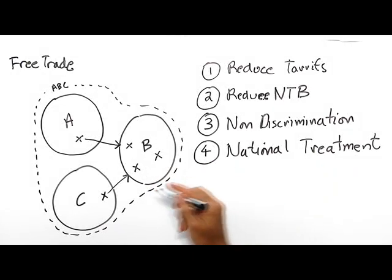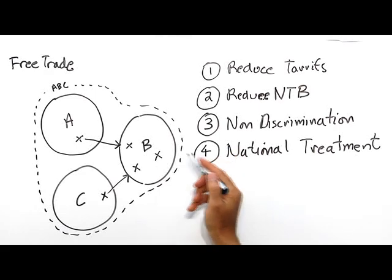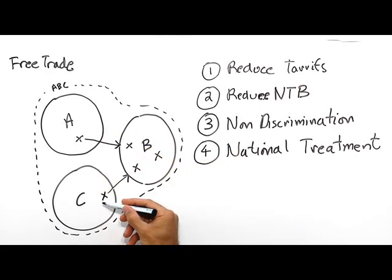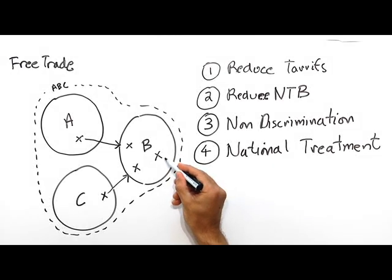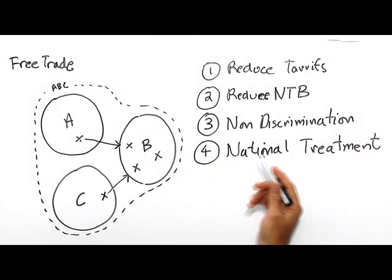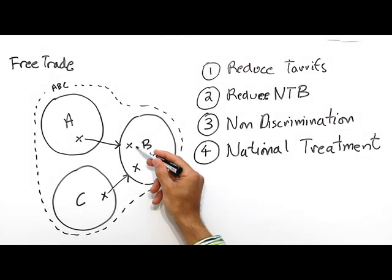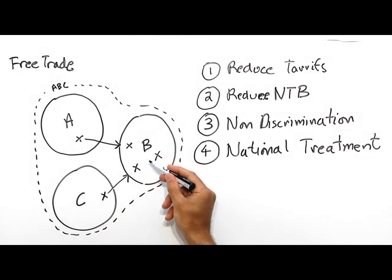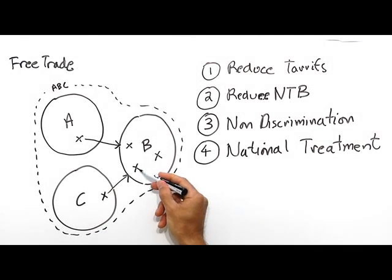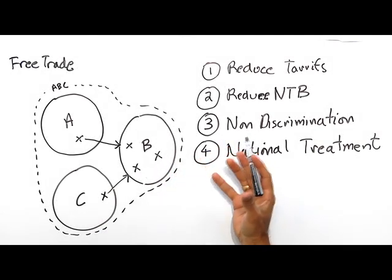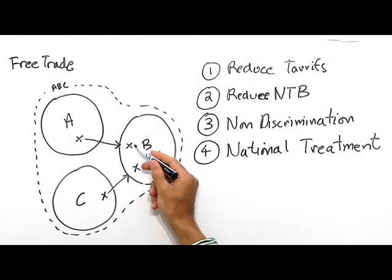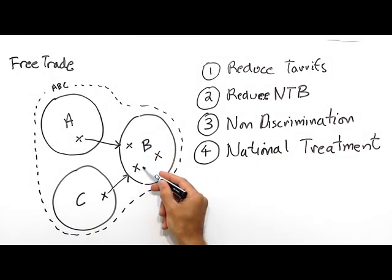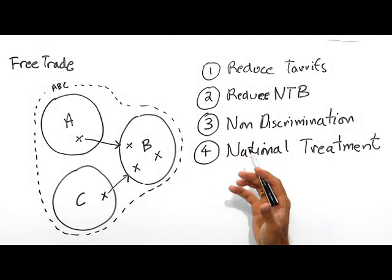National treatment says that any product X in this case coming from state A and state C cannot be treated any differently than the domestically produced equivalent. So state B, for example, couldn't put additional safety rules or regulations on the product X from state A or the product X from state C. It would have to have the same safety rules for the products produced in its own country and on the products produced in other countries. National treatment. Everyone is treated the same.